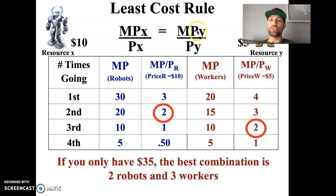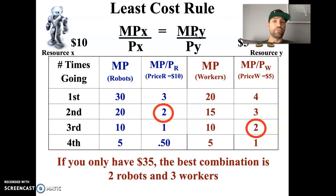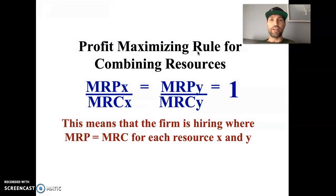The price will typically stay constant in your examples, and the marginal productivity will fall as you hire more of a resource and rise as you hire fewer. Most commonly on the AP exam, you'll be given three of these pieces of information and asked to solve for the other. For example, given the marginal productivity of both workers and robots and the price of robots, with the firm hiring the least costly combination, you'd need to find the price of workers.